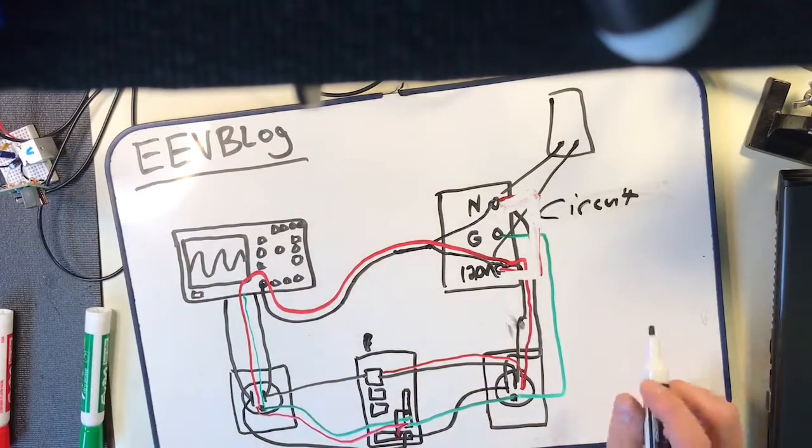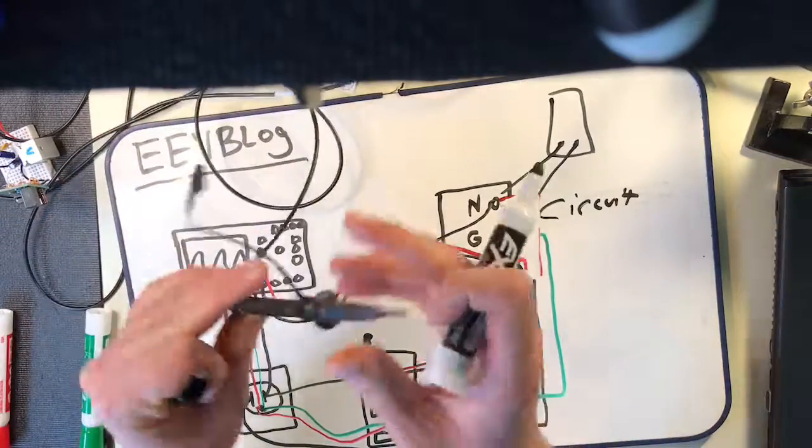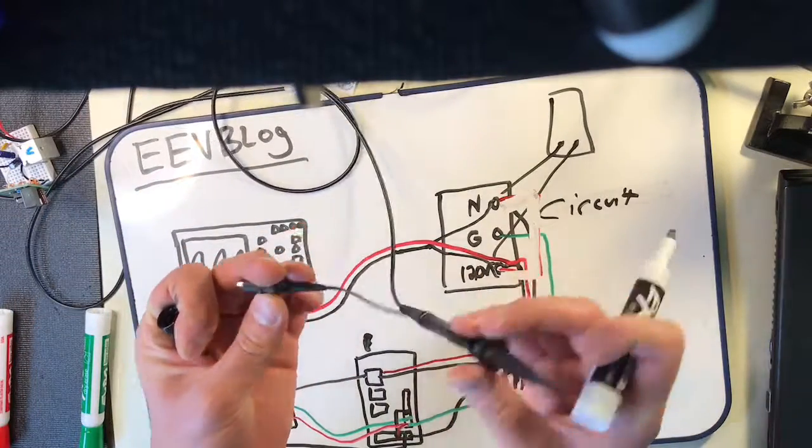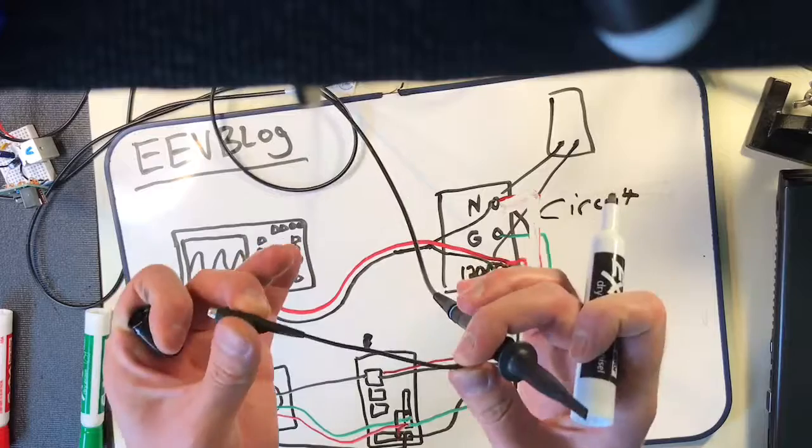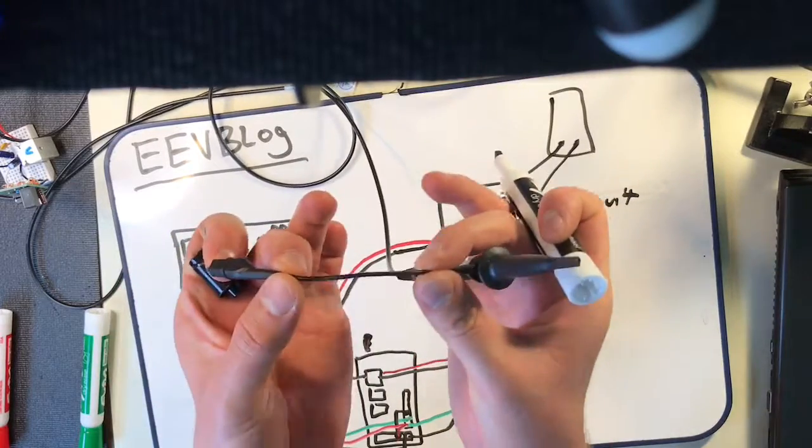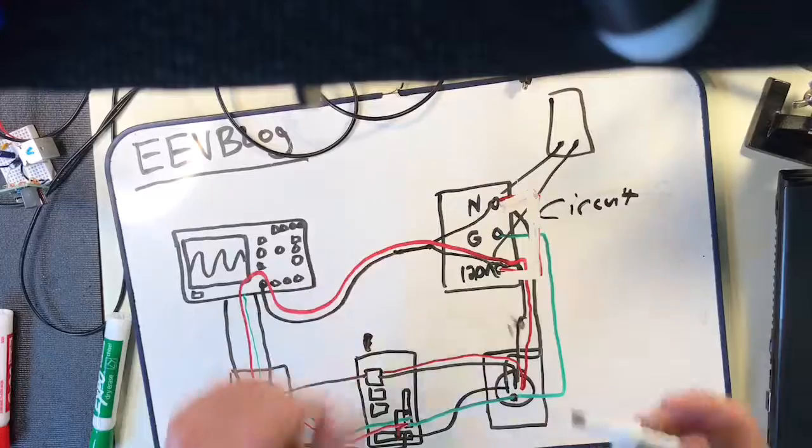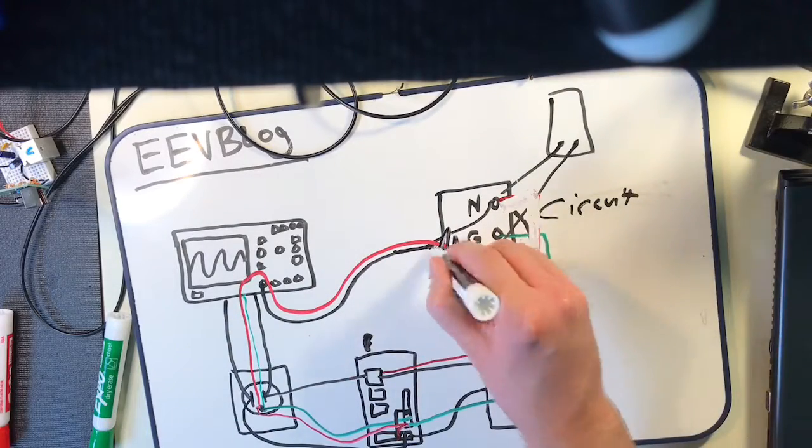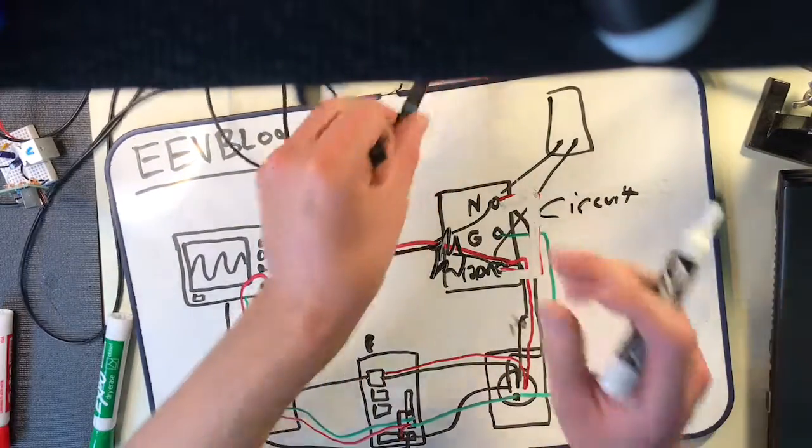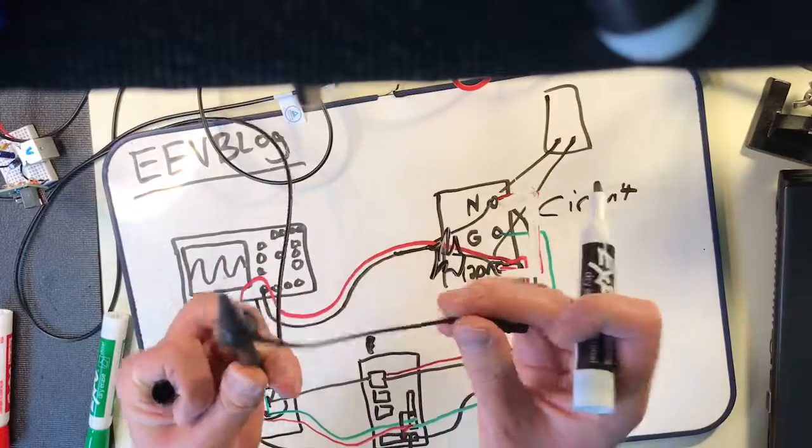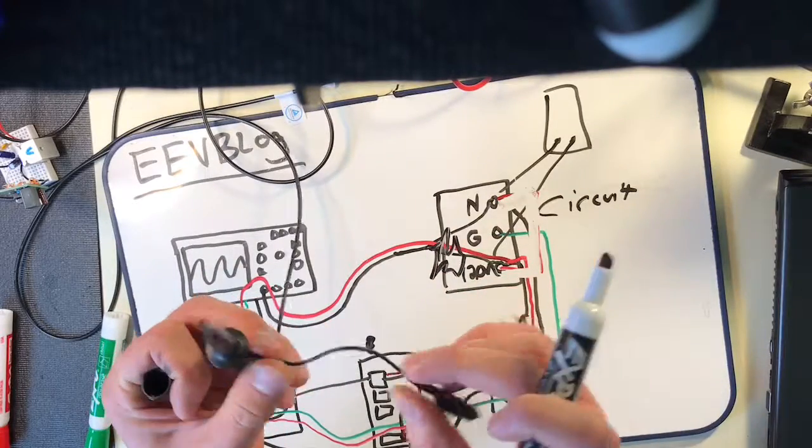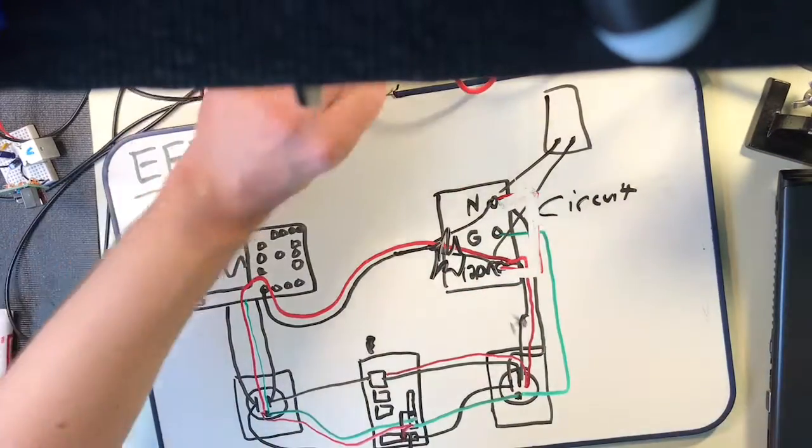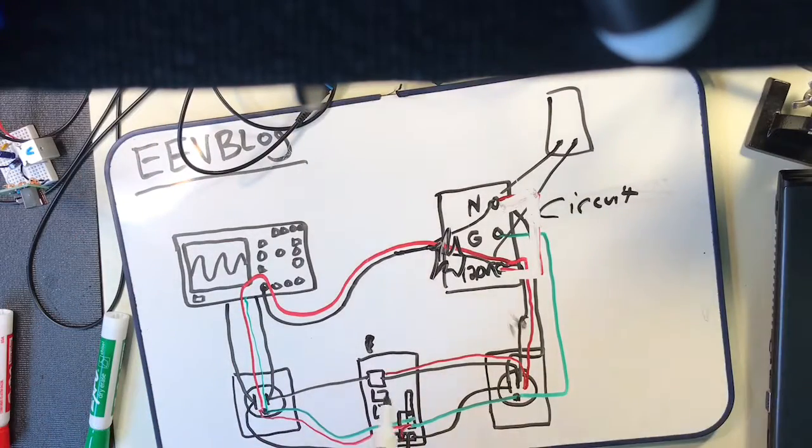So what happens then? Well, now this poor little oscilloscope probe is going to try and pass the full mains current, full mains voltage, through this dinky little cable. And what'll most likely happen: this probe will probably blow up. It'll vaporize, it may spark, it may blow apart.